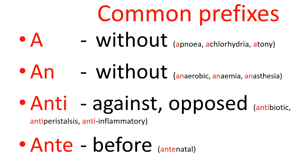Anti-peristalsis: peristalsis in the gastrointestinal tract propels things from the mouth toward the anus. Normally peristaltic waves travel from the mouth down the esophagus toward the stomach. Anti-peristalsis goes in the opposite direction, as might occur in vomiting where there is regurgitation against the normal physiological direction.